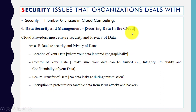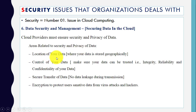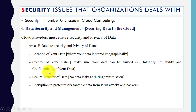Next is data security and management — securing data in the cloud. The cloud service provider must ensure the privacy and security of user data. There are different areas related to privacy and security: where your data is stored geographically (the location of your data), control of your data, making sure your data can be trusted in terms of integrity, reliability, confidentiality, and safe transfer of data — meaning no leakage during transmission and data should be encrypted.